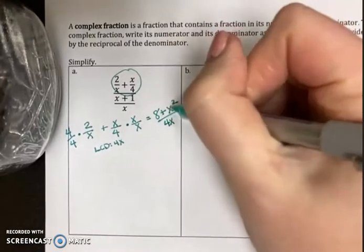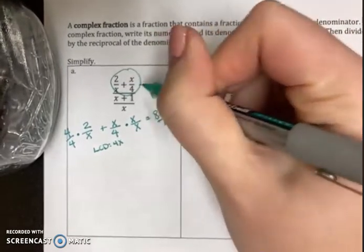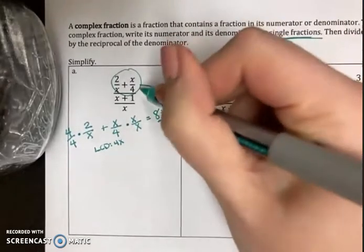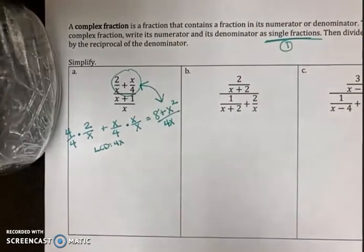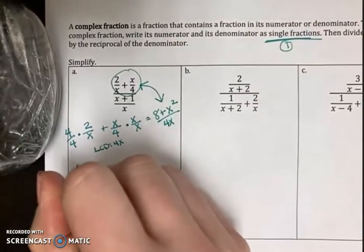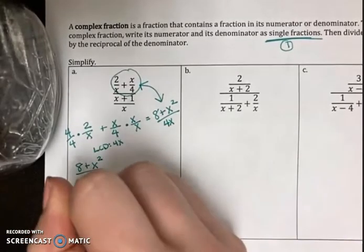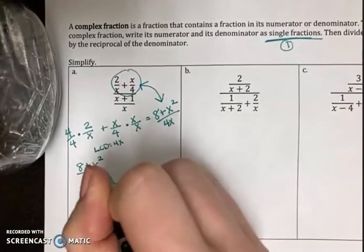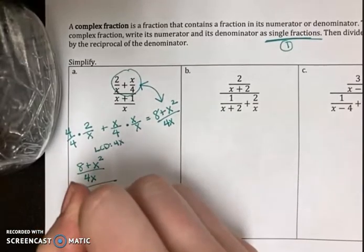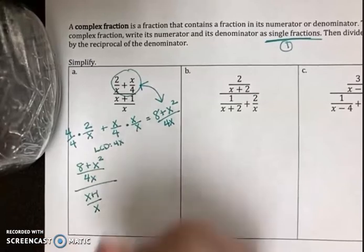So I'm just going to take this and plug it into the numerator. We're replacing it. I now have 8 plus x squared over 4x all over x plus 1 over x.